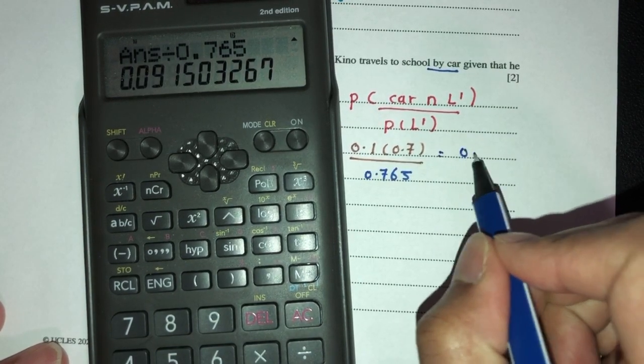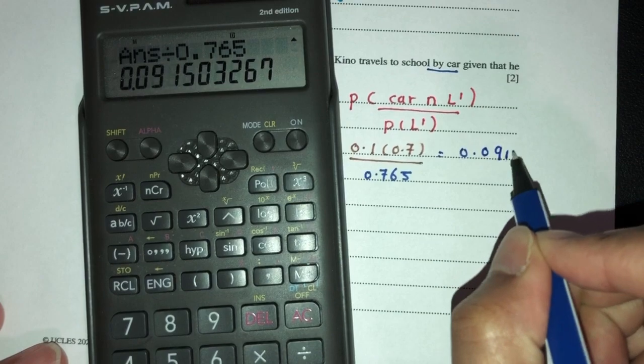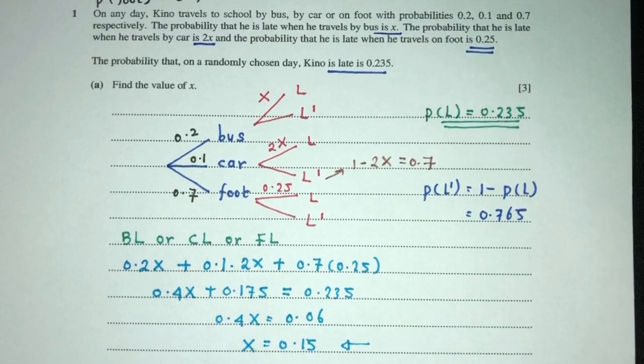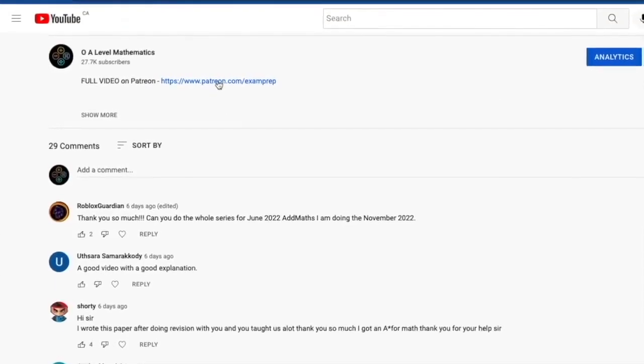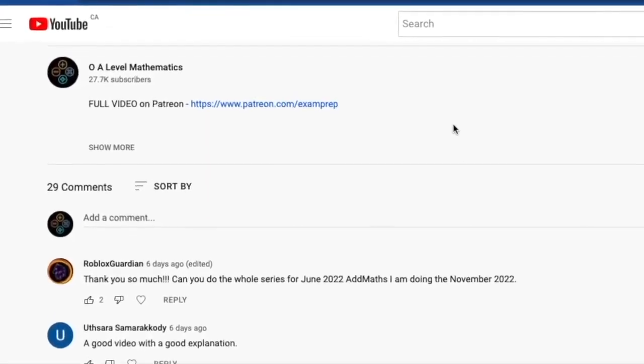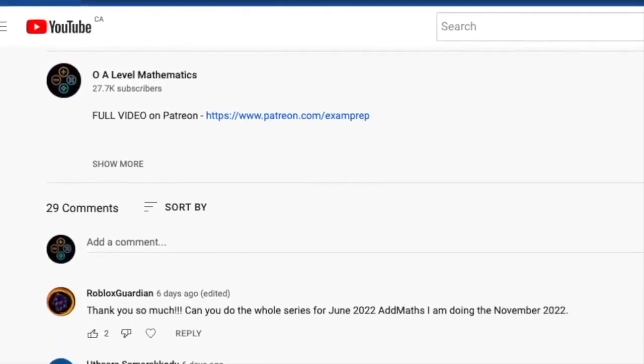0.1 times 0.7 divided by 0.765. That will become 0.0915. And this is your answer for question part B of question number 1. Check the description below and click on the link to access the Patreon page for the full video. With that being said, good luck and thank you for watching.